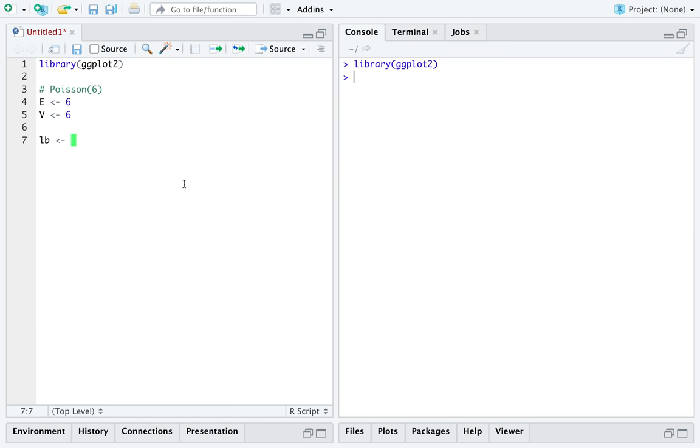So now we want the max of the minimum. Well, the support for the Poisson distribution has a minimum of 0, so technically I want the max between 0 and the floor of E minus 4 times the square root of V. That will be the lower bound.